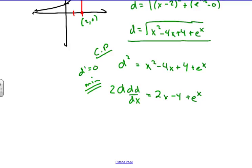Solving for this, we have the derivative of the distance, dd/dx, equals (2x - 4 + e^x) all over 2 times d. And we know we have our d value of the square root of x^2 - 4x + 4 + e^x.